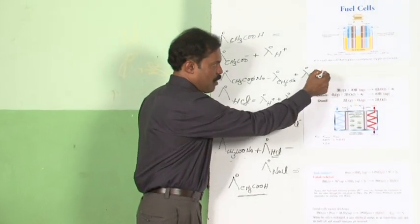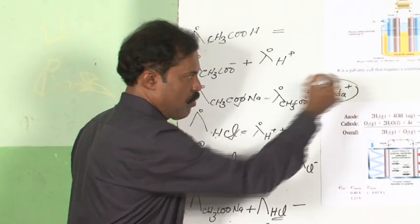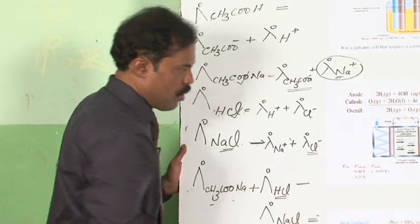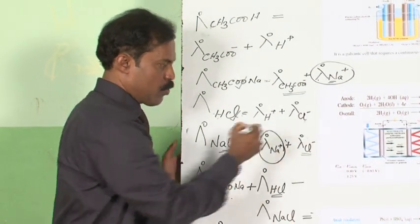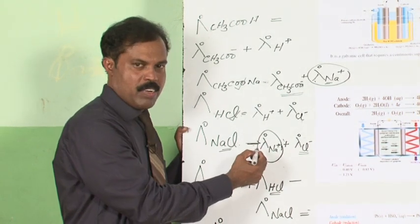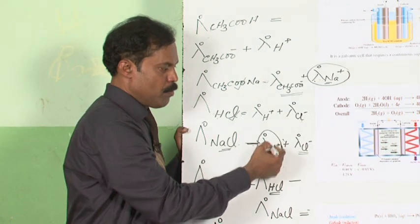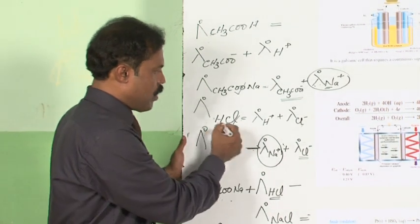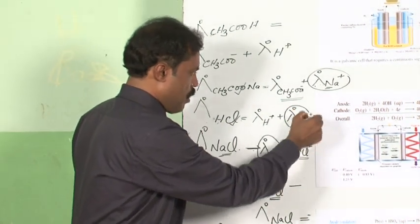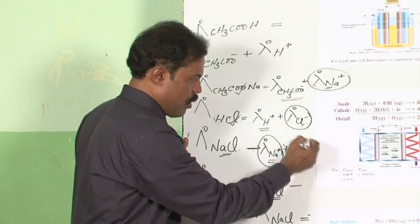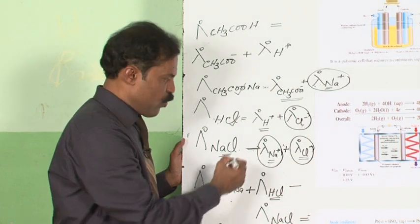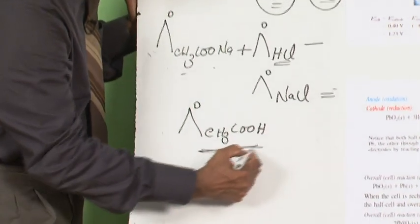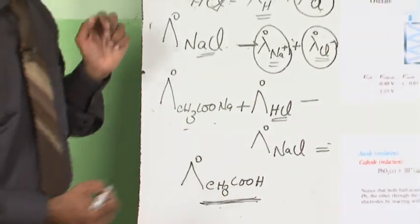The reason is that the lambda infinity value of Na⁺, whether it is associated with an acetate ion or with a Cl⁻ ion, remains the same as per Kohlrausch's law. It does not matter which other ion it is associated with — the contribution remains the same. Similarly, the molar conductivity at infinite dilution of Cl⁻, whether it is with H⁺ or with Na⁺, is the same. Therefore, when you add the values of sodium acetate and HCl and then subtract NaCl, you get the lambda infinity of acetic acid. This is one of the applications of Kohlrausch's law.